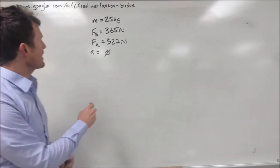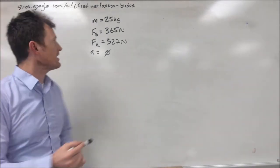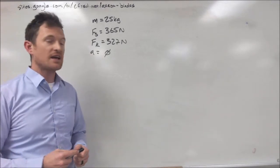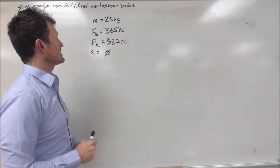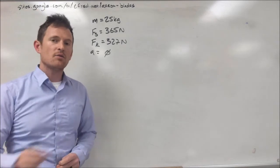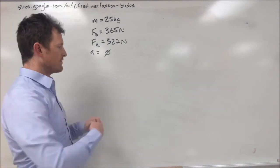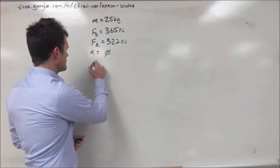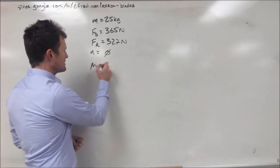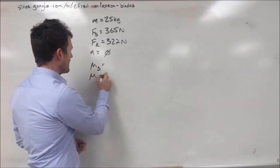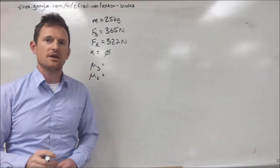As you can tell from the stuff that I have written up over here, what we have is a 25 kg object that is pushed with a static force of 365 newtons, later with a kinetic force of 327 newtons. What we're trying to figure out now is our mu s, our coefficient of static friction, and our mu k, our coefficient of kinetic friction.